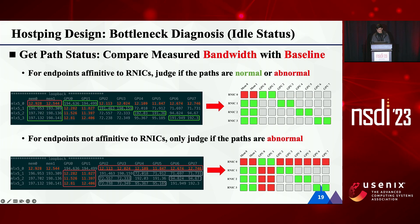For endpoints with affinity to the R-NIC — meaning all memory nodes and GPUs under the same root port as the R-NIC — the R-NIC could reach the line rate. Thus, for these paths, we judge their status by comparing with the baseline. If the measured bandwidth is lower than the baseline by a threshold, we mark this path as abnormal; otherwise, we mark it as normal. For other endpoints, the R-NIC cannot reach line rate due to high PCIe latency. Thus for these paths, if the bandwidth is still above the baseline, we mark them as uncertain, shown as gray blocks in the figure.